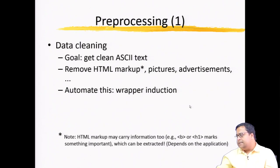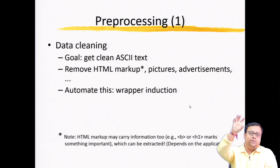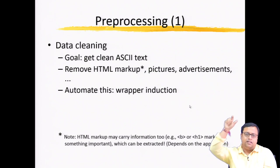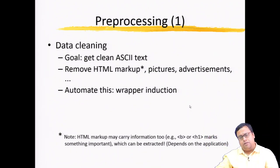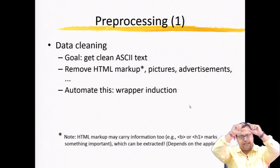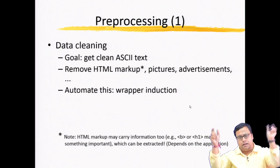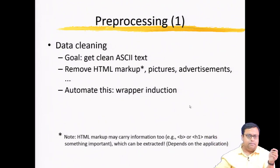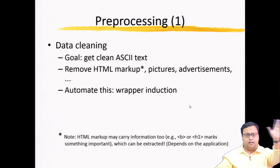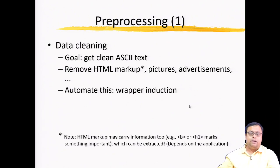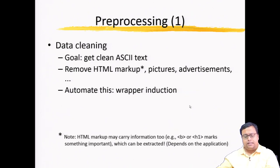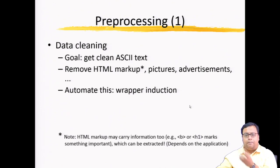For example, in a review, there is a title of the review and then the full text. 'It is a very good movie' might be the header under an h1 markup, and the text is in a paragraph tag. If you copy the h1 markup and analyze the title of the review separately from the text of the review, you might get newer information. You can also automate this with wrapper induction — you do not want to do all data cleaning manually.